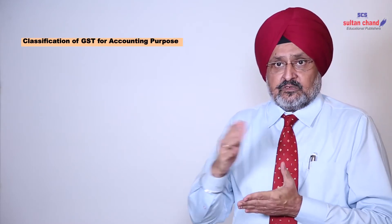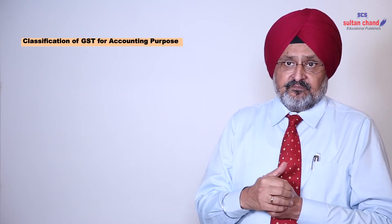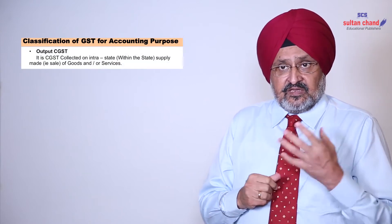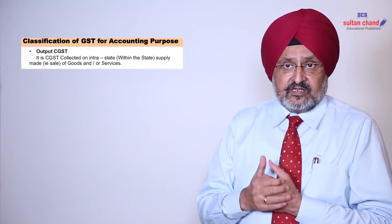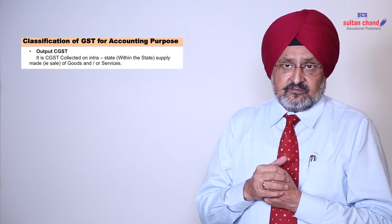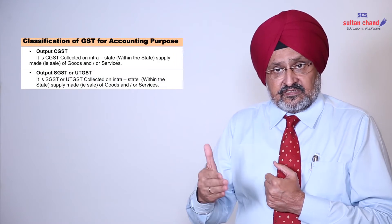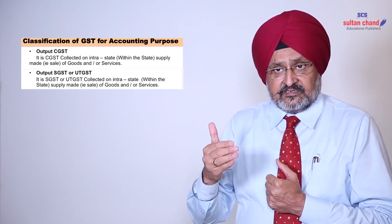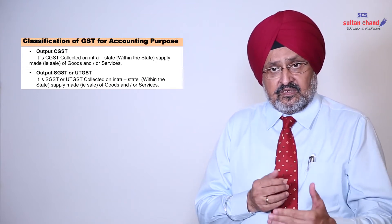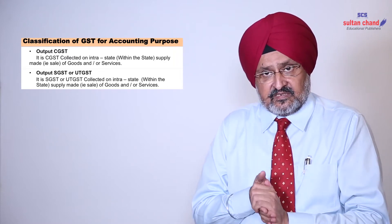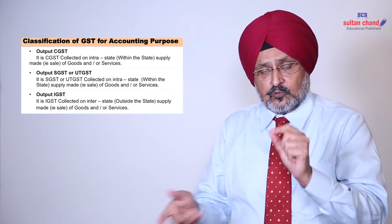Similarly, we will maintain separate accounts for output GST. Output CGST is the GST collected on intrastate — that is within the state — supply made, i.e., sale of goods and/or services. Similarly, output SGST is collected on intrastate supply of goods and services, and when interstate supply or sale is made, it is categorized as output IGST.